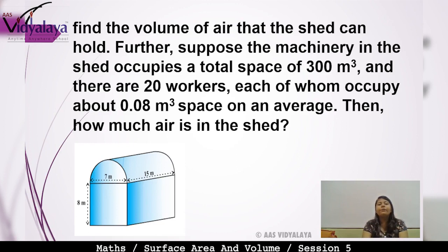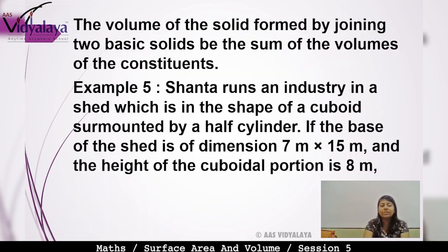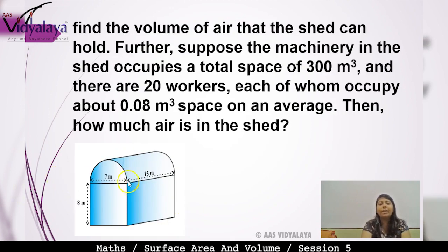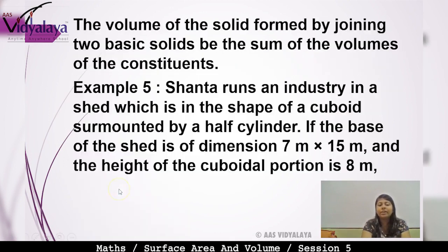Further, suppose the machinery in the shed occupies about 300m³ space, and there are 20 workers, each occupying about 0.08m³ space on average — then how much air is left in the shed? So understand: the shed is a cuboid surmounted by a half cylinder.